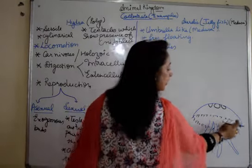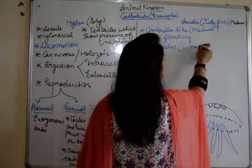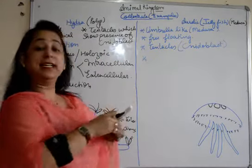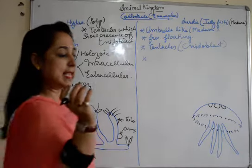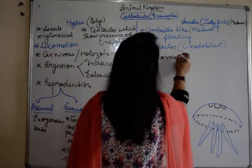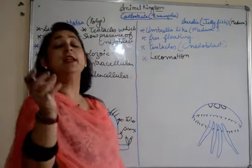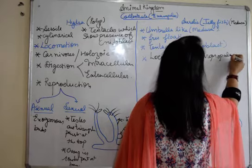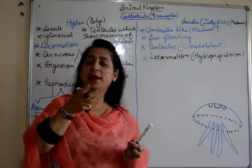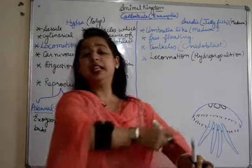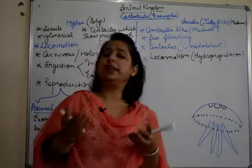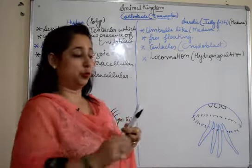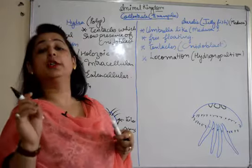It has tentacles which are found at the periphery, which have nidoblast cells in them, also known as the stinging cells. The locomotion, as I told you that it shows locomotion, it is free-floating. So the locomotion can be by hydro propulsion. Hydro propulsion means the water is sucked in by the mouth, then it pushes the water down and hence it moves up. You must have seen jellyfish moving. It's propelled out with the water force, water pressure. So this is the locomotion in the jellyfish.